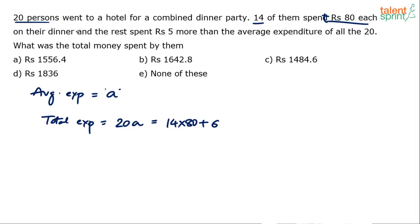14 of these guys spent 80 each, so 14 into 80. Plus remaining six guys—14 spent 80 each on the dinner and the rest, the remaining six of them, spent Rs 5 more than the average. Five more than the average means a plus 5. So 14 into 80 plus six into a plus 5, that's the equation.